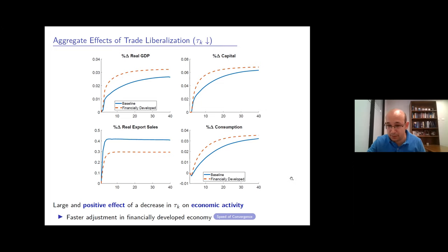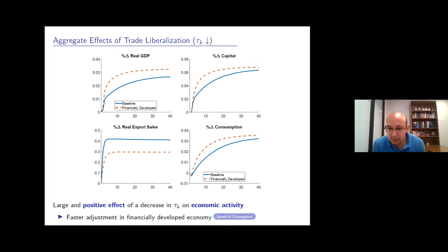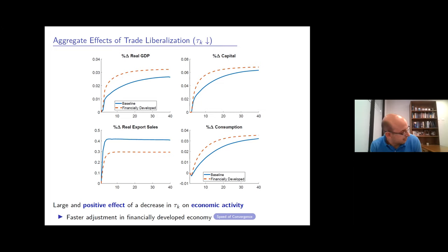A participant asks whether welfare will be decomposed between the speed of transition and the final steady state, and notes that if a bond-holding cost is used to make the small open economy stationary, the two economies would converge to the same steady state and all benefits would come from the transition speed-up. David agrees to address this and shows two comparisons: welfare excluding the transition (jumping directly from first to second steady state) and welfare including the transition.